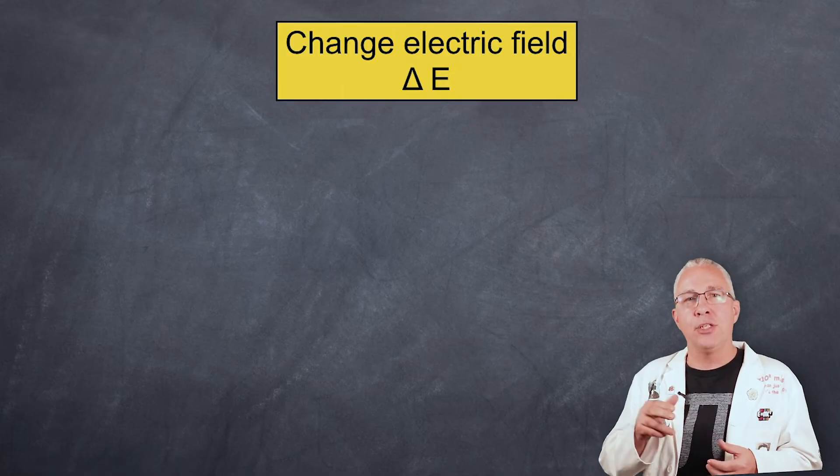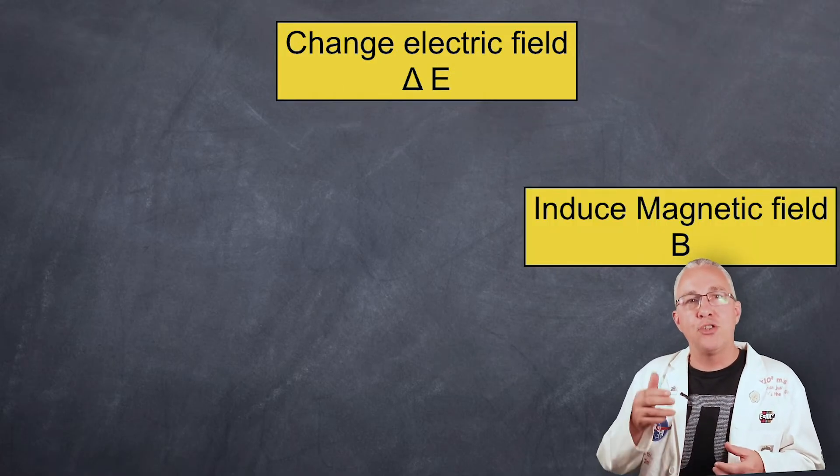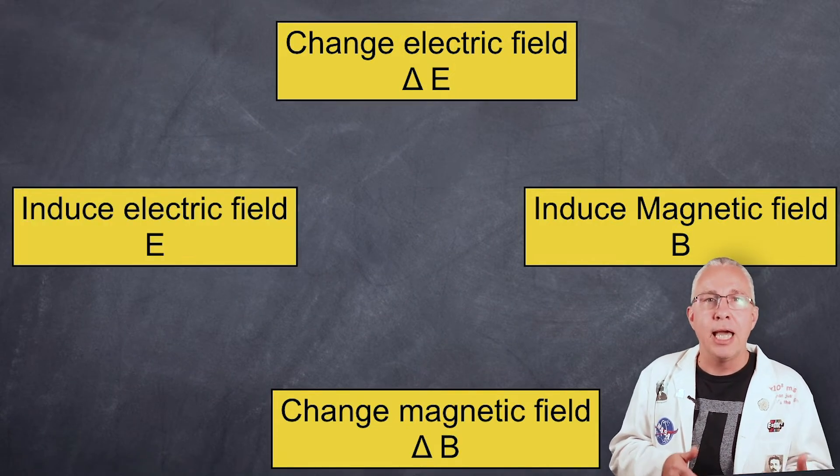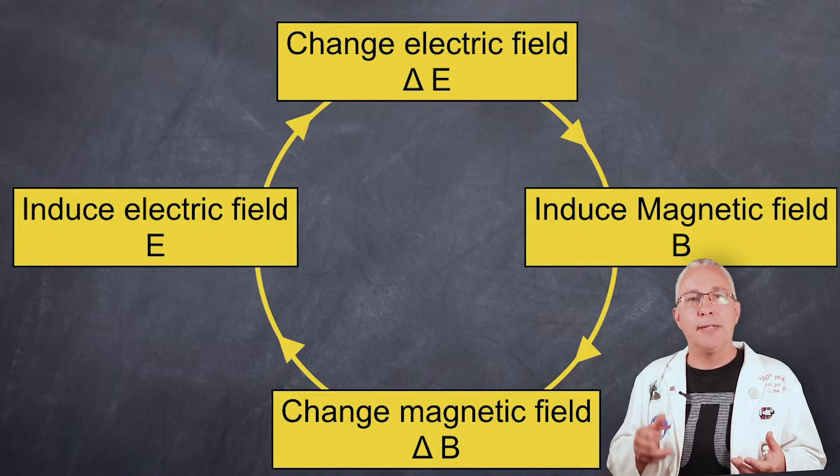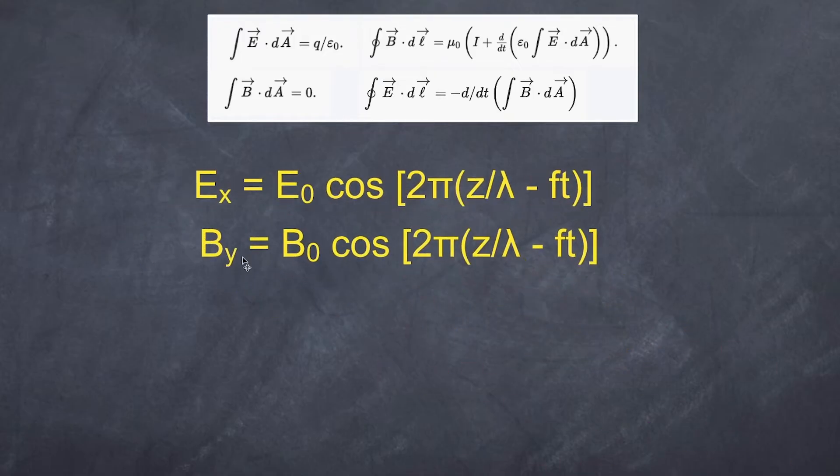Now first he noticed that if you change an electric field you induce a magnetic field. But this changing magnetic field would induce another electric field. And this would start the cycle again. What he did next was look at his four equations. And he derived a formula that talks about the electric field and the magnetic field in such a way that they describe a wave, a periodic wave.